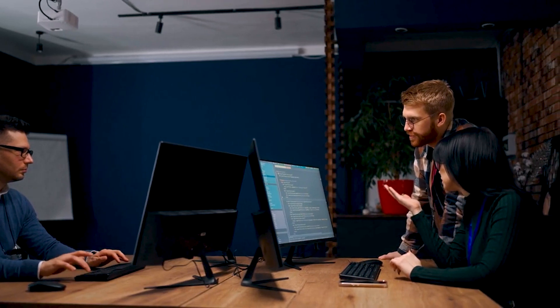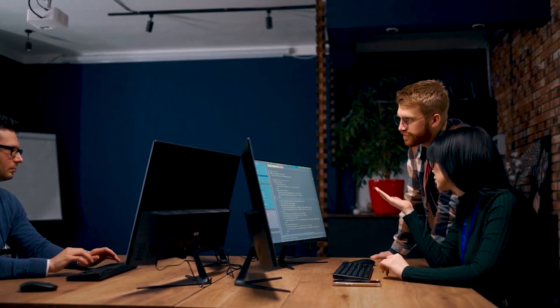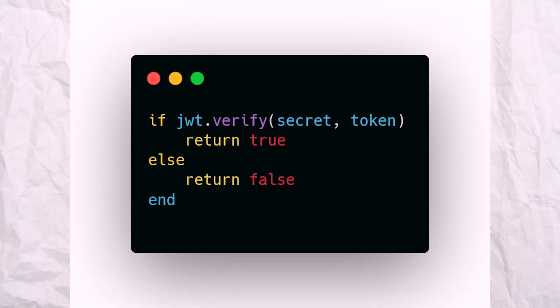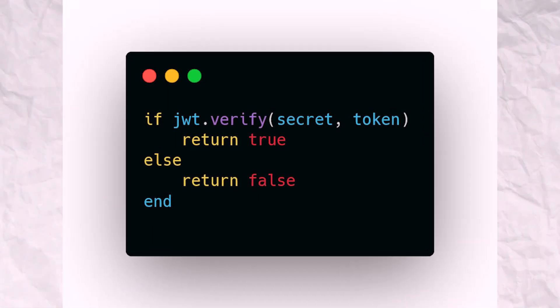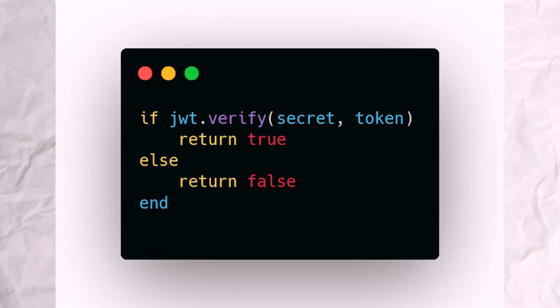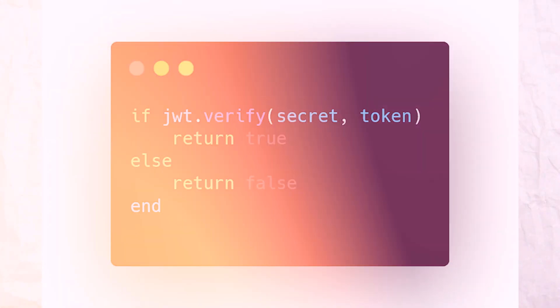Our goal today is not to waste your time but to arm you with practical tips that can save you a lot of trouble in your application security journey. So if you remember one thing from this video, let it be this. Your JWT validation code probably looks something like this: if jwt.verify(secret, token), you return true, otherwise you return false.